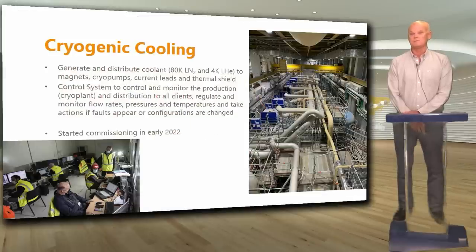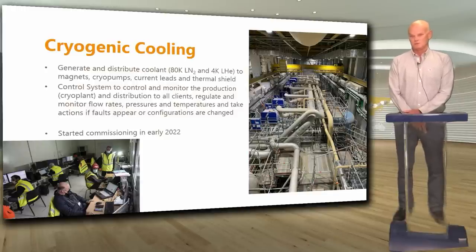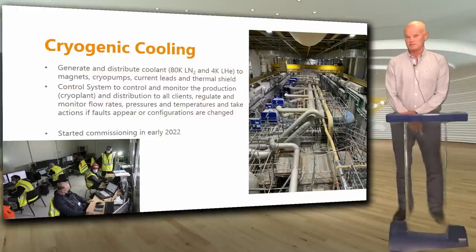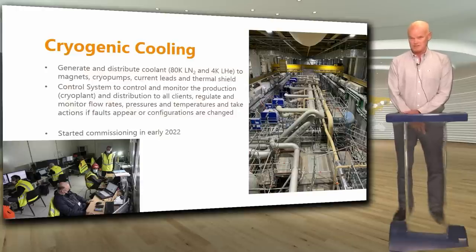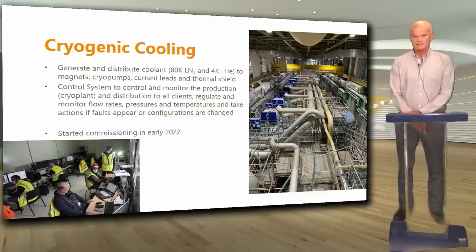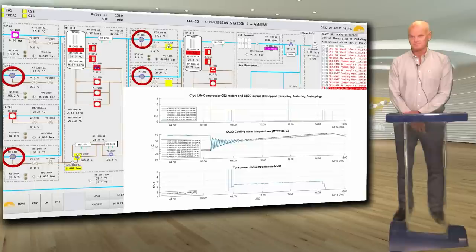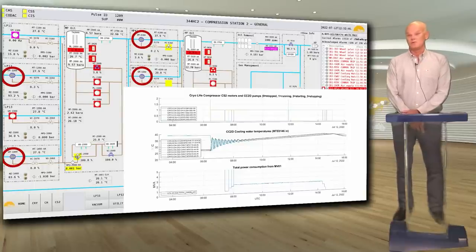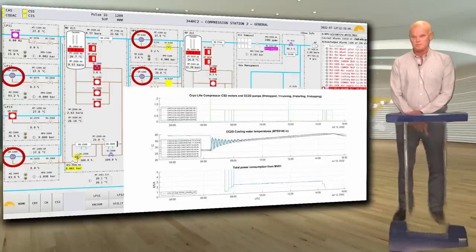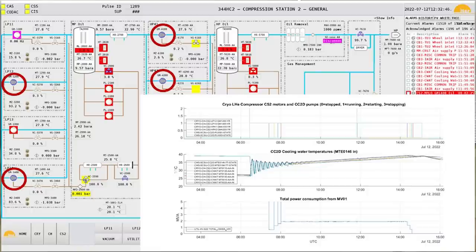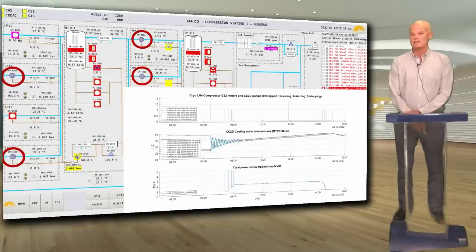Next we have cryogenic cooling. We need to produce and distribute liquid nitrogen and liquid helium to the magnets, cryopumps, current leads and thermal shield. The control system monitors and controls production and distribution to all clients, regulating flow rates, pressures and temperatures. This system started commissioning in early 2022. One HMI example shows the first test of helium compressor stations — big water-cooled motors — displaying data from the helium compressor motors, cooling water pump, cooling water temperature, and consumed power from the electrical distribution, combining data from three different systems.